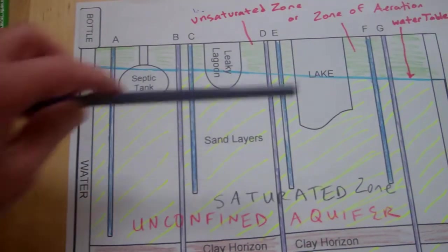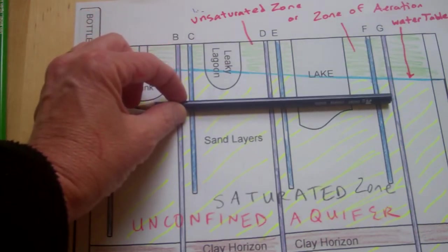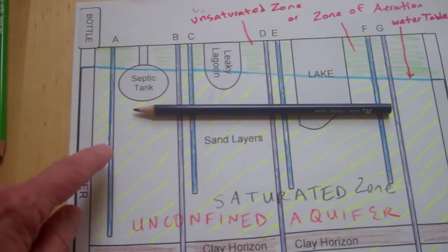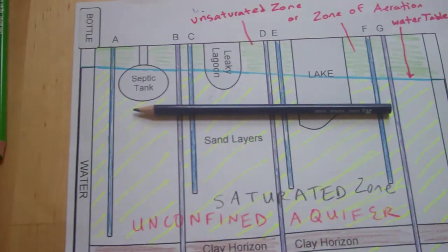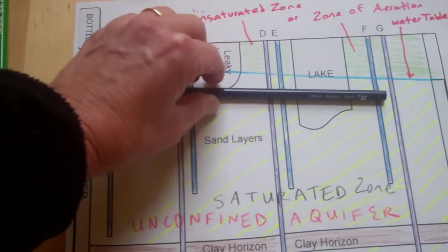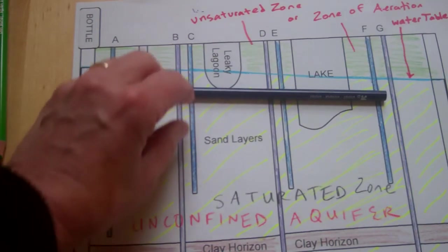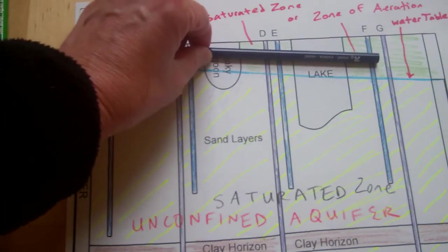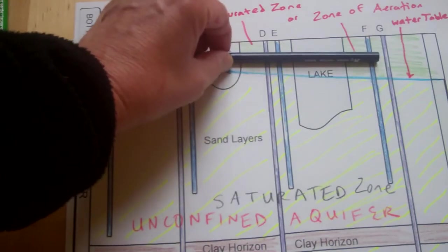What could lower the water table? If wells A, C, E, and F were all pumping large amounts of water, that could lower the water table slightly. On the other hand, if there is a lot of rainfall during a rainy season, the water table can rise up into the unsaturated zone, shifting the whole system upward.